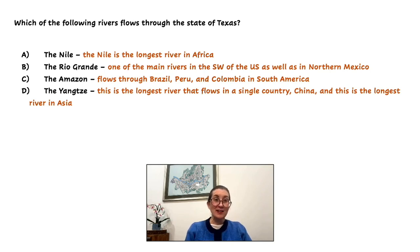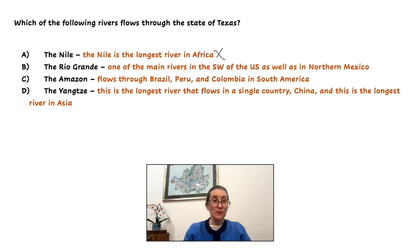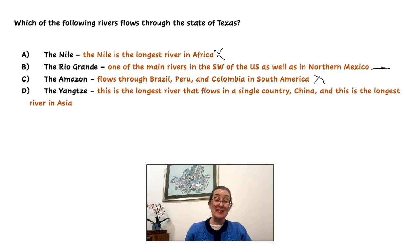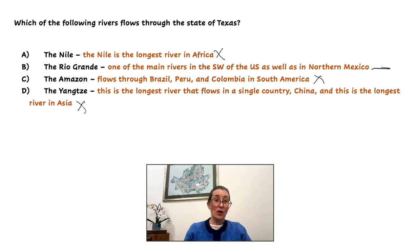Let's look at each. The Nile is the longest river in Africa, so that is not going to be our answer. The Rio Grande is one of the main rivers in the southwest of the United States, as well as in northern Mexico, so a definite maybe. The Amazon flows through Brazil, Peru, and Colombia in South America, so not. And the Yangtze is the longest river that flows in a single country, China, and is the longest river in Asia. So our answer has to be the Rio Grande, which is one of the main rivers in the southwest of the U.S. and in Texas.